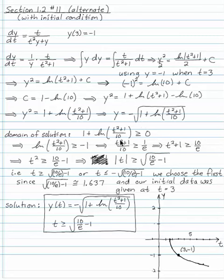Now let's look at the domain of our solution. The quantity under the square root has to be non-negative. So we say 1 plus this logarithm is greater than or equal to 0. So the logarithm has to be greater than or equal to minus 1. And if you exponentiate both sides, t squared plus 1 over 10 has to be greater than or equal to 1 over e. Which means t squared plus 1 is greater than or equal to 10 over e.